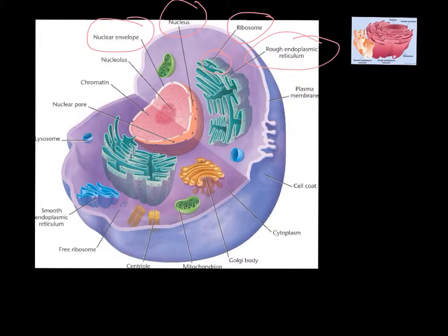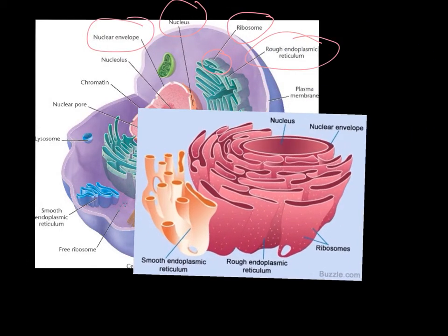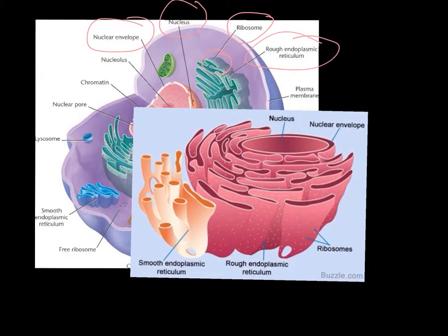The smooth ER in this picture refers to the side that doesn't have ribosomes on it, known as the smooth endoplasmic reticulum.